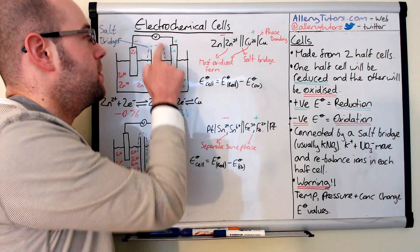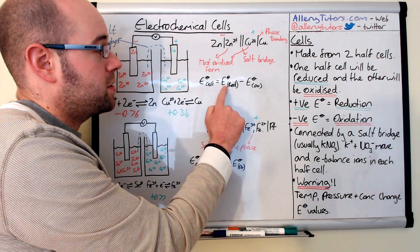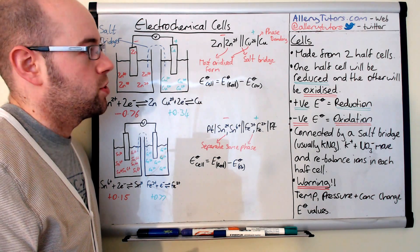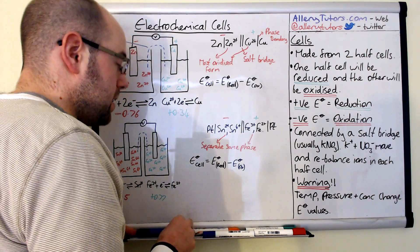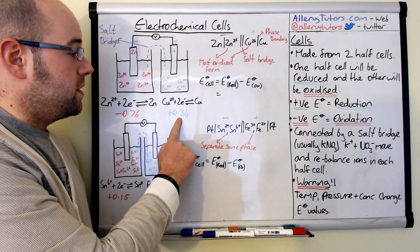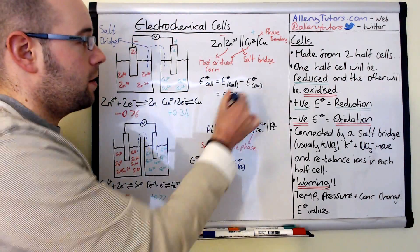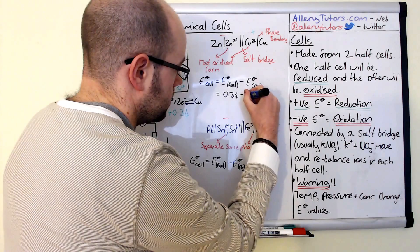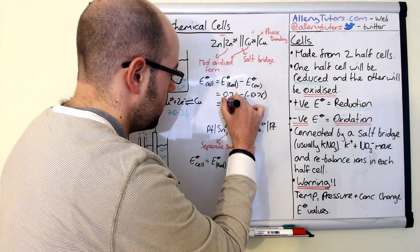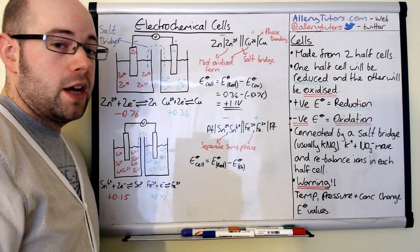We can now work out the E° of the cell — this is what the voltmeter is reading, the potential difference across the cell. The formula is: E°cell = E° of the reduced form − E° of the oxidised form. The reduced form is copper at +0.34 V, and the oxidised form is zinc at −0.76 V. So: E°cell = 0.34 − (−0.76) = +1.1 V. That is the electrode potential of this full cell.